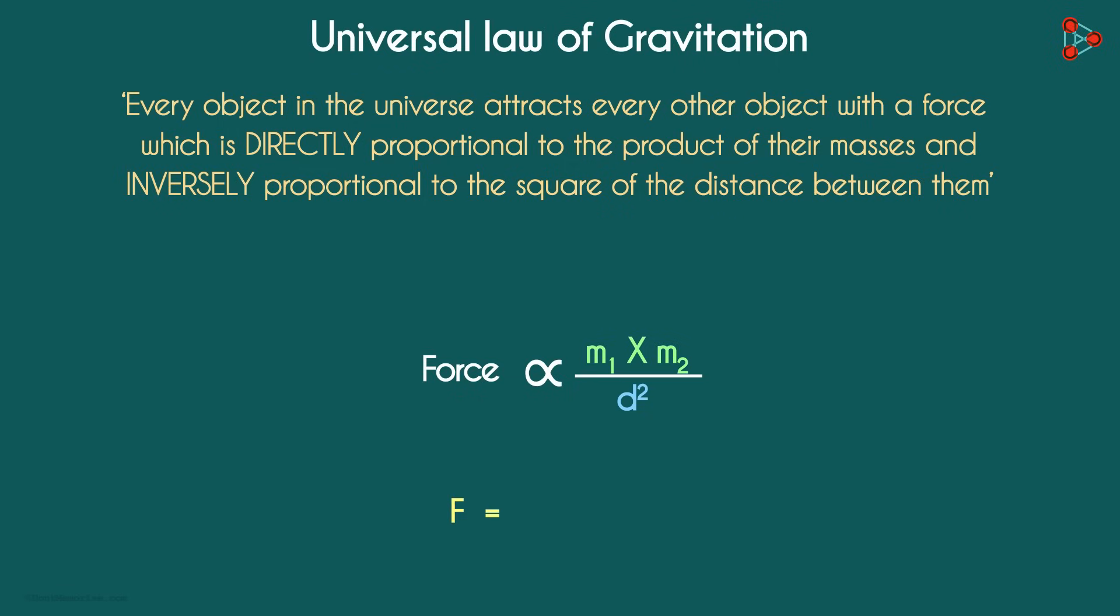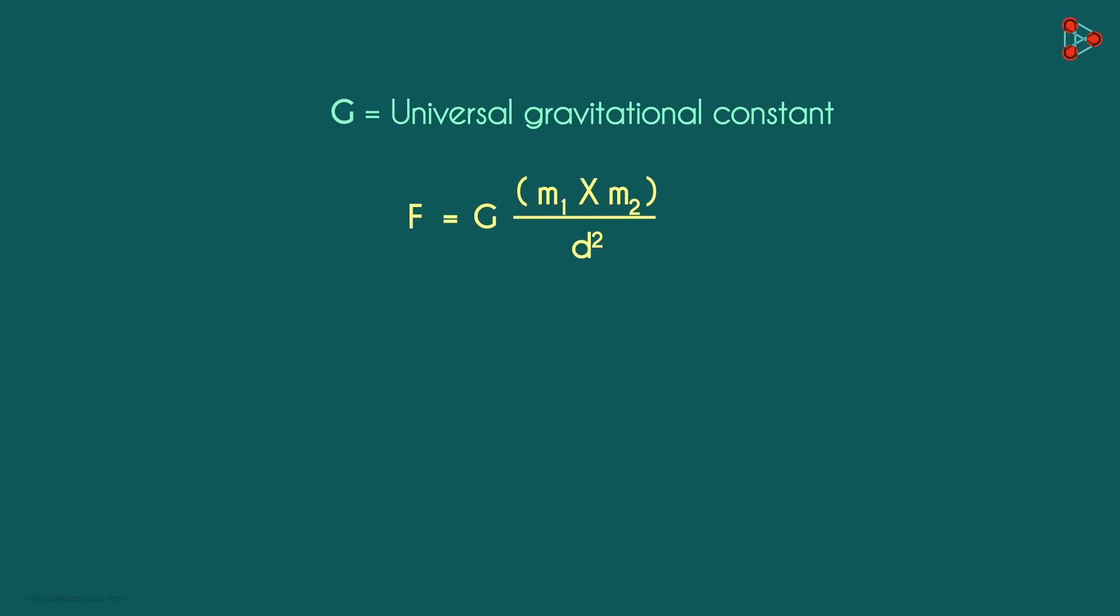This can be written as F equals G times m1 times m2 over d squared. G here is the constant of proportionality and is called the universal gravitational constant. The equation can be modified and written as G equals F times d squared over m1 times m2.